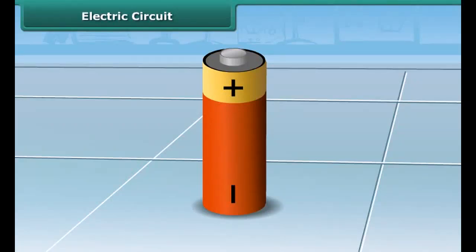An electric cell or a dry cell is the source of electricity for the bulb to glow.